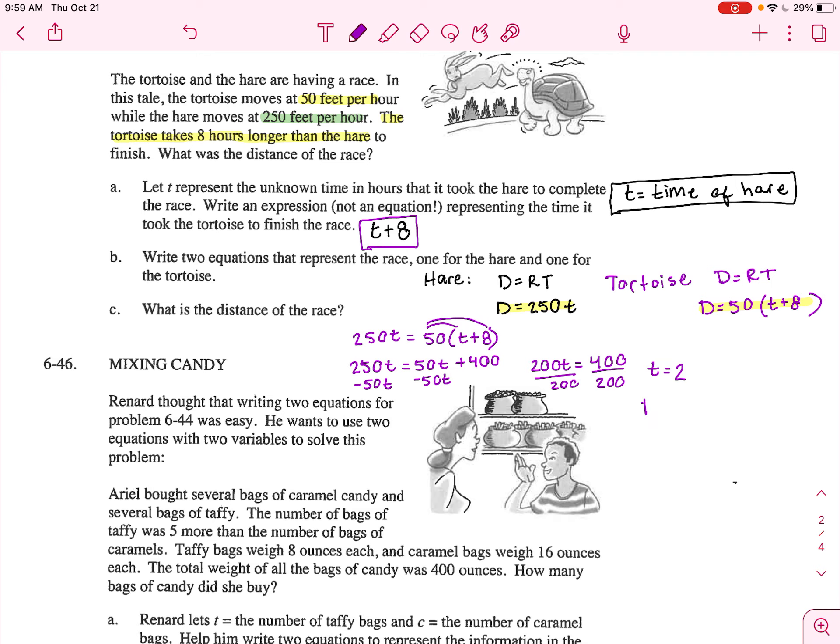So it wants distance. Well, you can either plug this T in to this T in order to solve for distance or this T to solve for distance. I'm going to do this one. Distance equals 250 times time is two. We know that distance is equal to 500 feet.